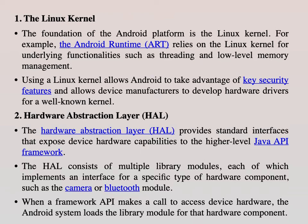The second layer is the Hardware Abstraction Layer, or HAL. HAL provides standard interfaces that expose device hardware capabilities to the higher-level Java API framework. The HAL consists of multiple library modules, each implementing an interface for a specific type of hardware component such as the camera or Bluetooth. When a framework API makes a call to access device hardware, the Android system loads the library module for that hardware component.